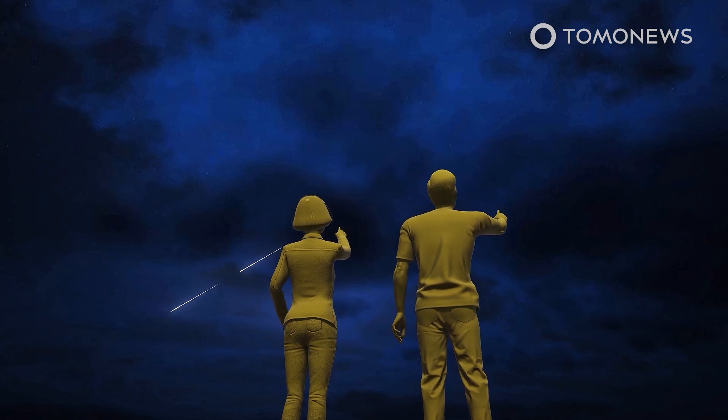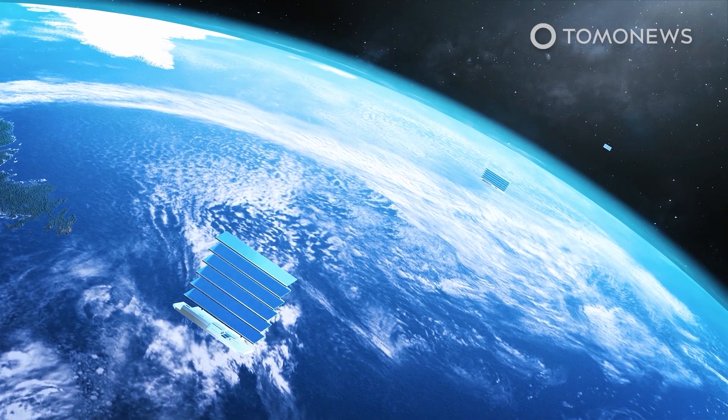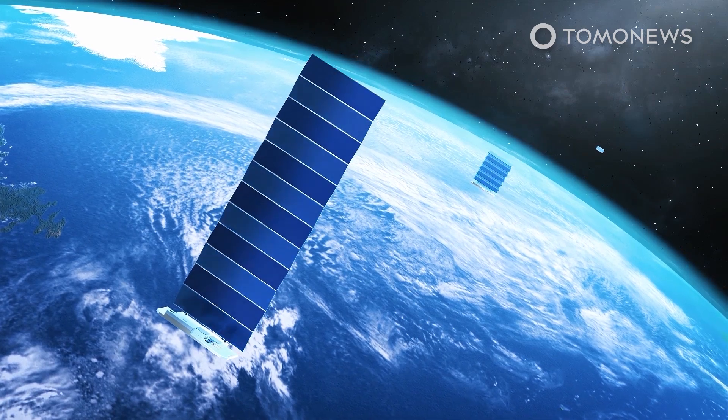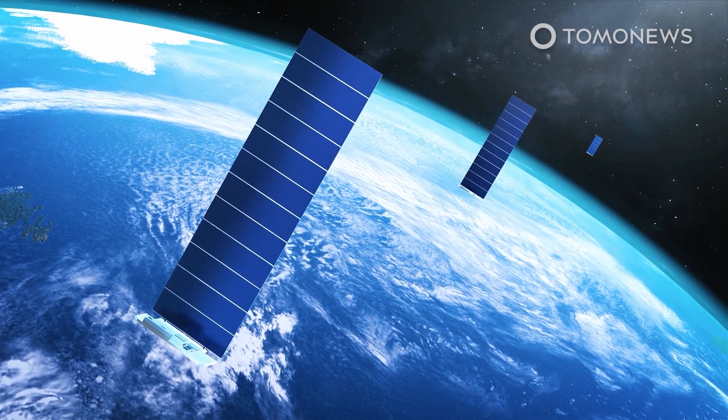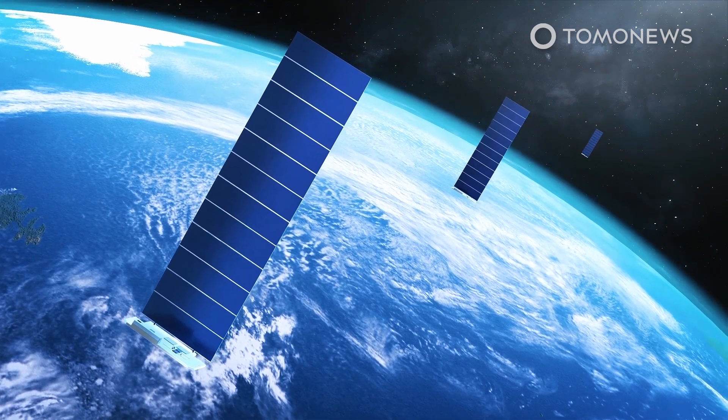So they crashed back to Earth. SpaceX said it launches its Starlink satellites at lower orbit so they will quickly de-orbit if anything goes wrong. It says the satellites are designed to burn up in the atmosphere, with no parts falling to Earth's surface.